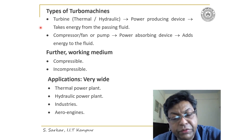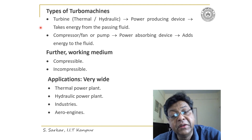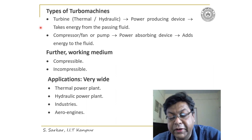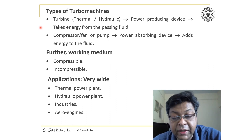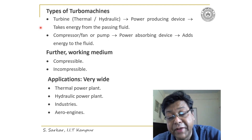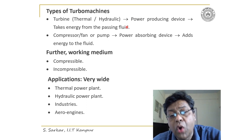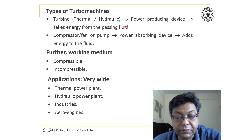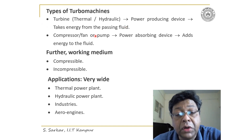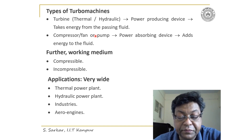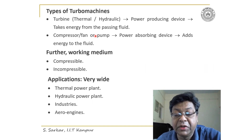Let us begin with a turbine. A turbine could be a thermal turbine or a hydraulic turbine. A steam turbine is an example of a thermal turbine, and a Kaplan turbine is an example of a hydraulic machine. The turbine is called a power producing device, and it takes energy from the passing fluid. That is, the fluid is expanded as it passes through a turbine, and the pressure at the exit of the turbine decreases.